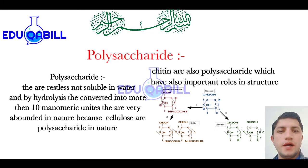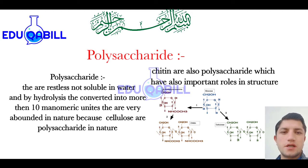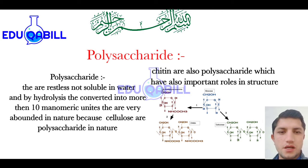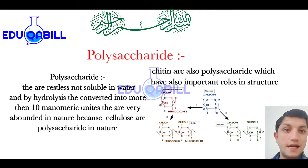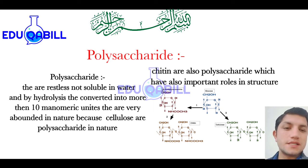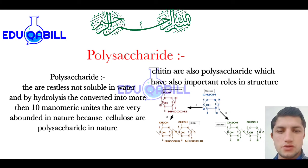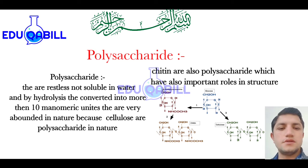To summarize, carbohydrates are organic compounds which contain carbon, hydrogen, and oxygen. Carbohydrates are classified into three classes: monosaccharide, oligosaccharide, and polysaccharide. Monosaccharides are sweet in taste and most soluble in water. Oligosaccharides are sweet in taste but less soluble in water than monosaccharides. We discussed that this difference in solubility is due to the hydroxyl group.